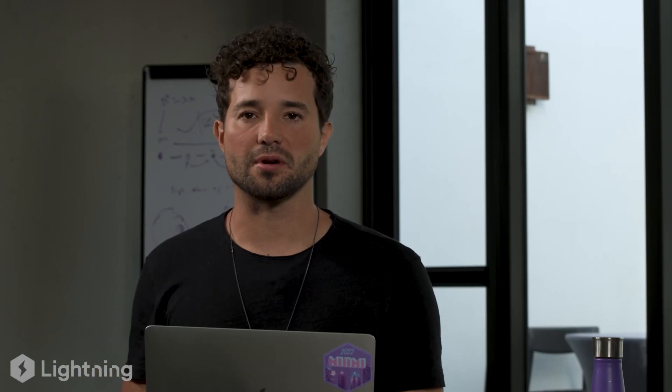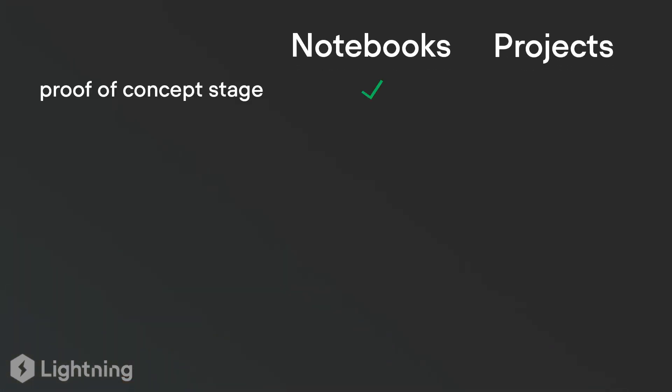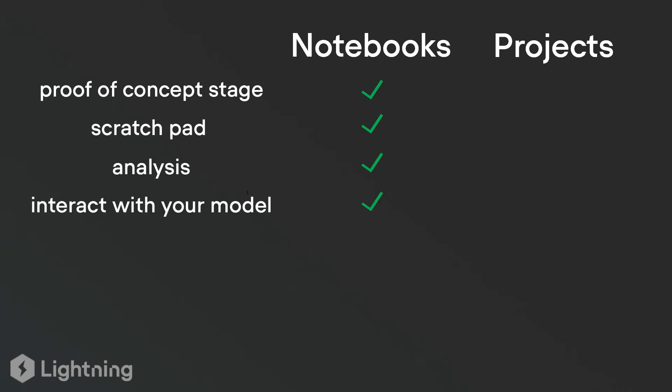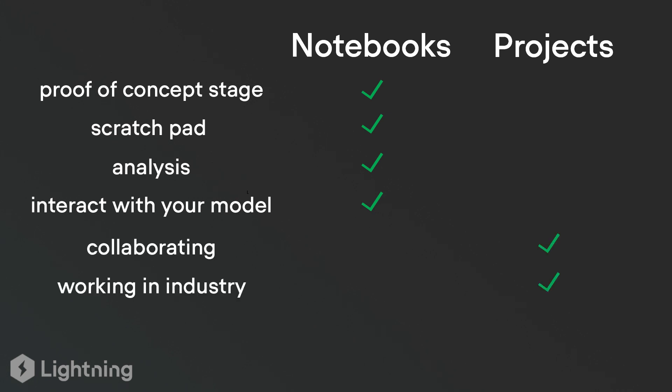The takeaway is there's no right or wrong answer — it really depends on your workflow. If you're in a POC stage or want to experiment with ideas, a notebook is not a bad idea and will actually help you move really quickly. Another use case is when you want to analyze something or interact with your model. Once you know you're going to evolve it, collaborate with people, work in industry, or publish open source, then it's probably a good idea to migrate it into a project. One tool is not better than the other — different tools are better for different things. Be mindful of the task, think about your future self, and pick the right tool.